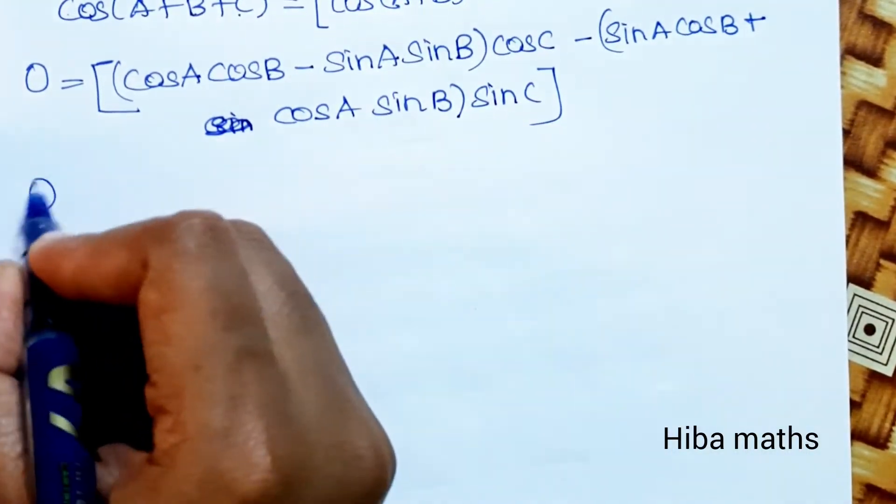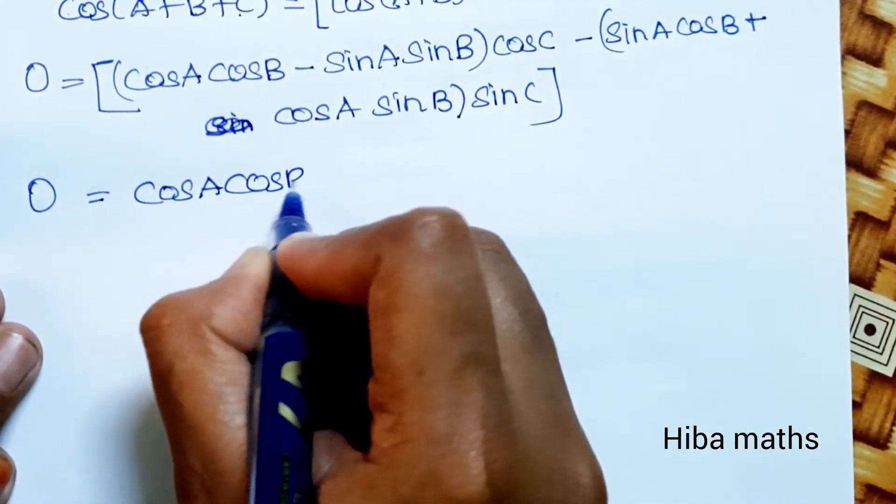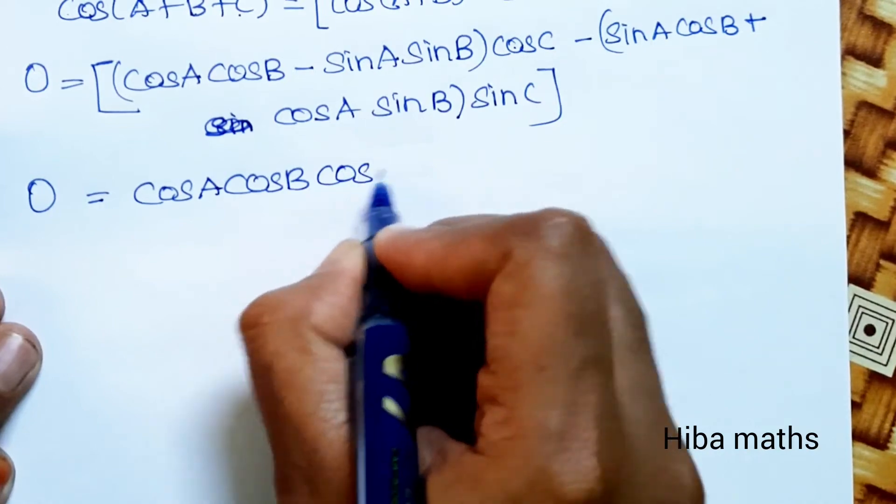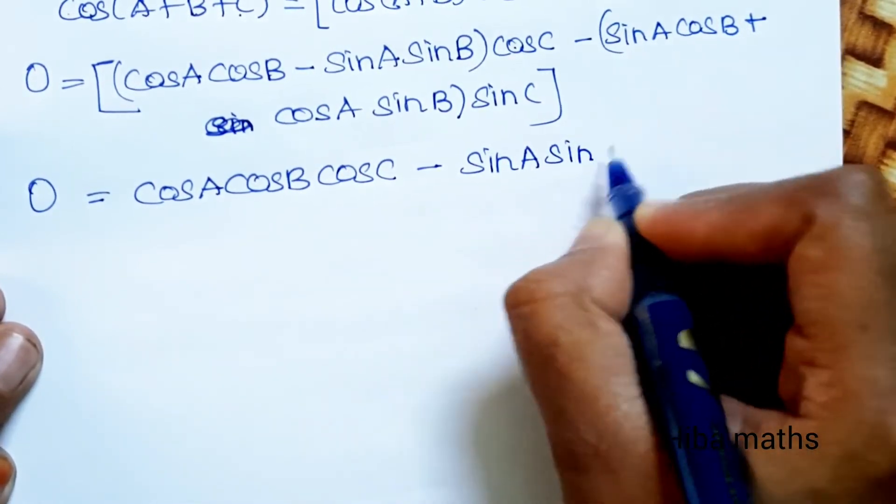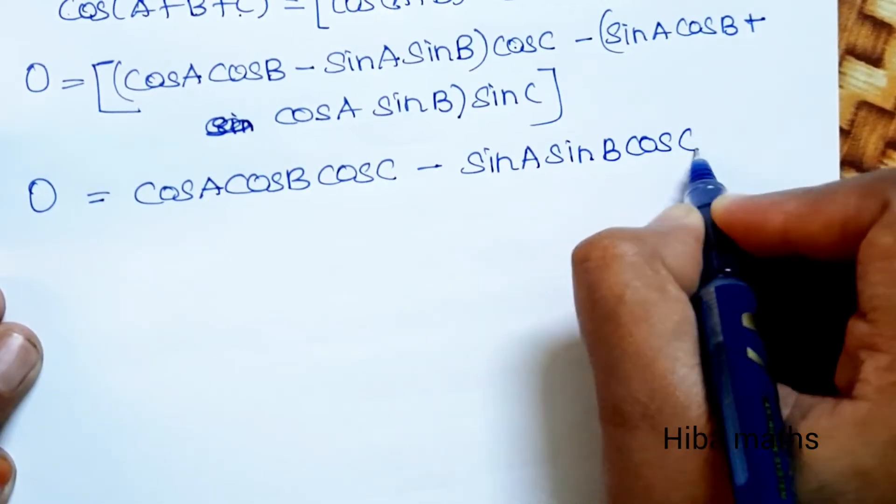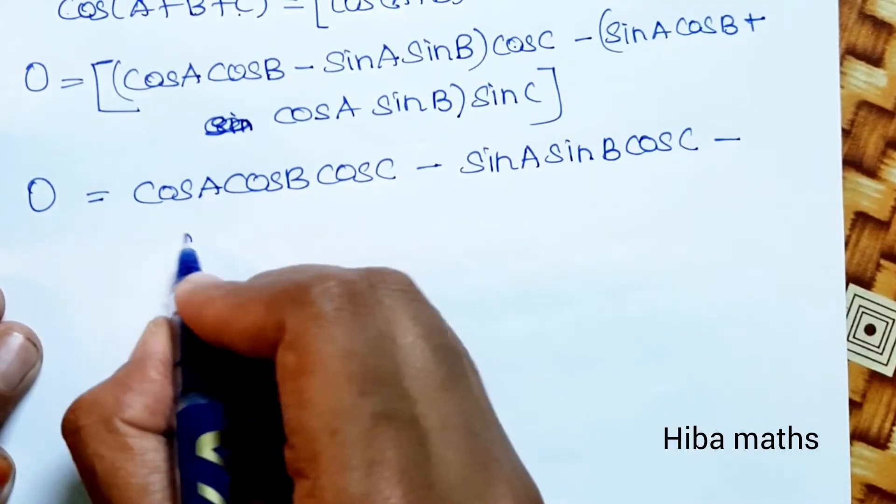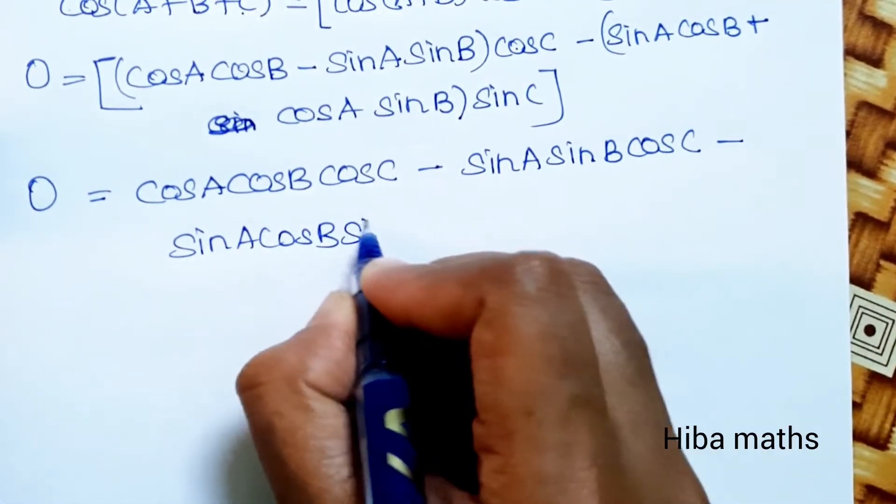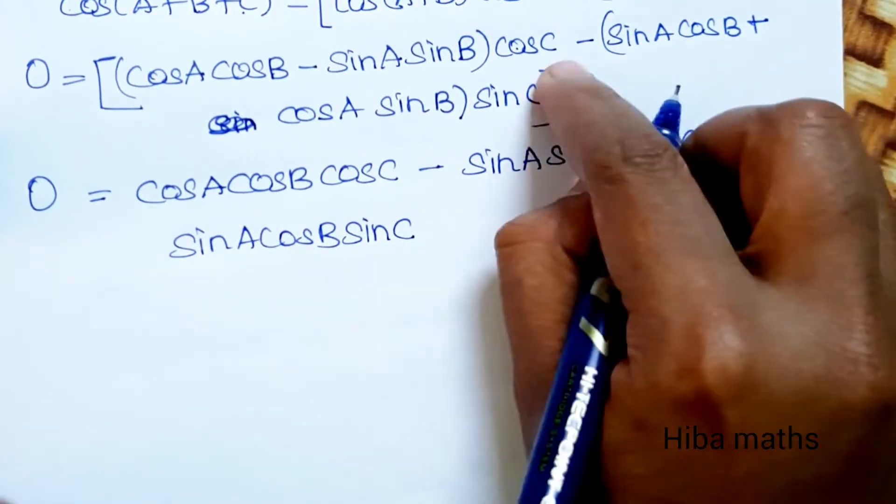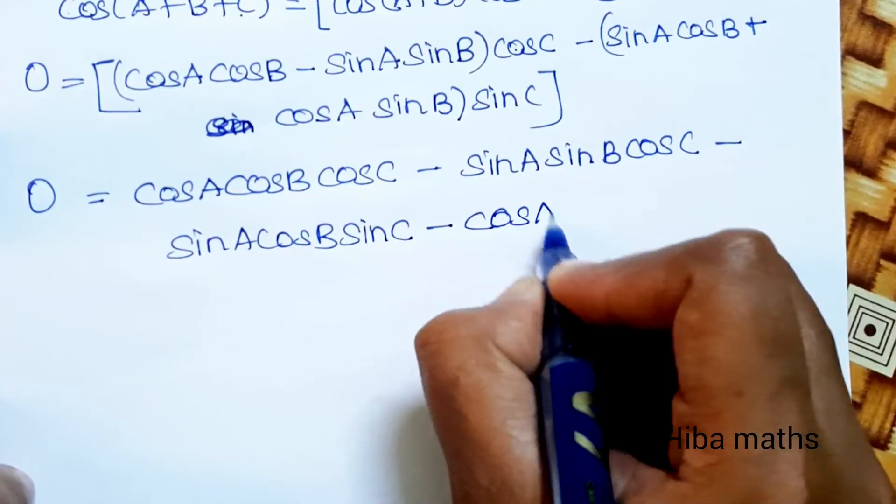0 is equal to cos A cos B cos C minus sin A sin B cos C minus sin A cos B sin C minus cos A sin B sin C.